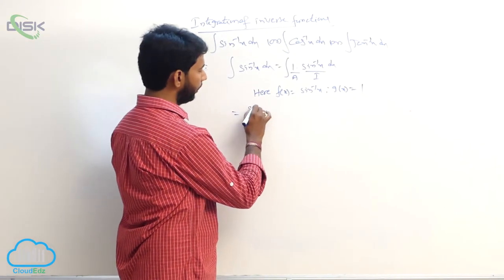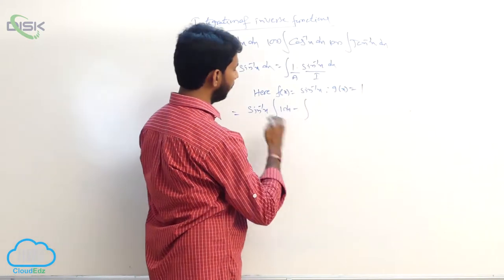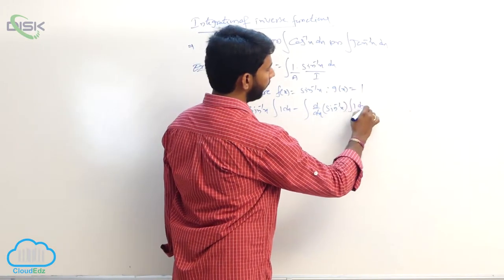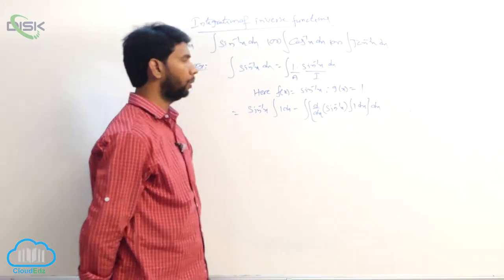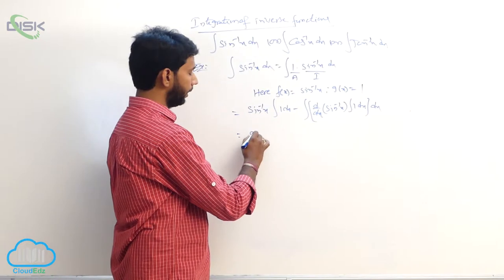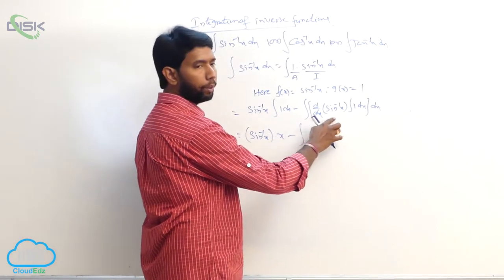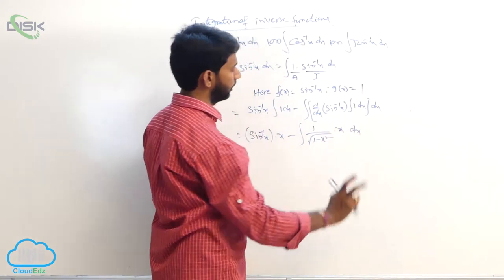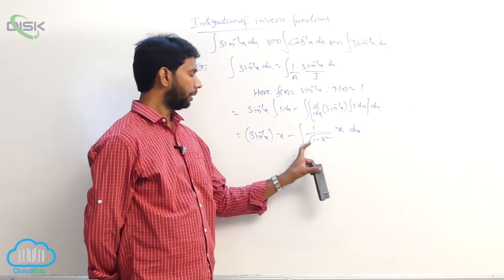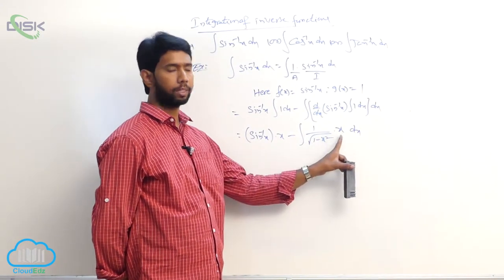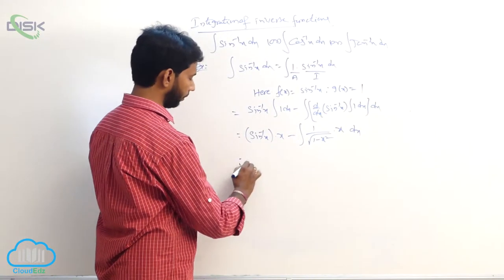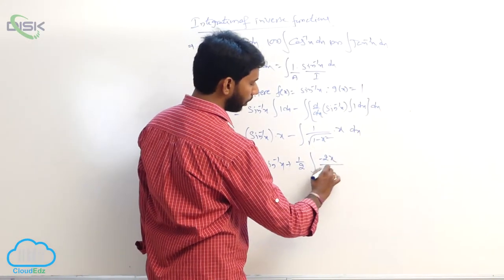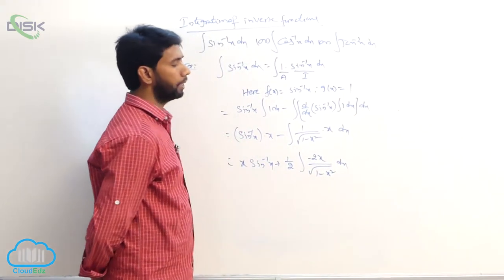By using by parts, let f of x equal to sin inverse x and g of x equal to 1. Apply the by parts formula: sin inverse x into integral of 1 dx minus integral of d by dx of sin inverse x into integral of 1 dx, whole dx. Integral of 1 dx value is x, giving x into sin inverse x minus integral of derivative of sin inverse x, which is 1 by root of 1 minus x square, into x dx.